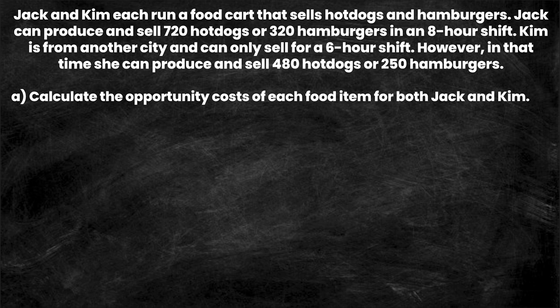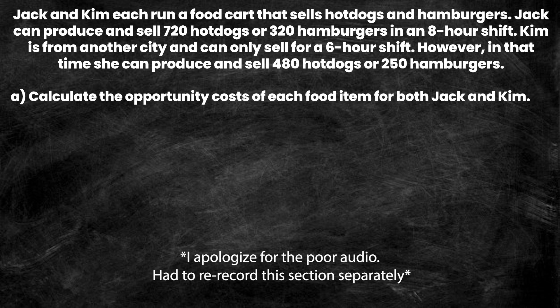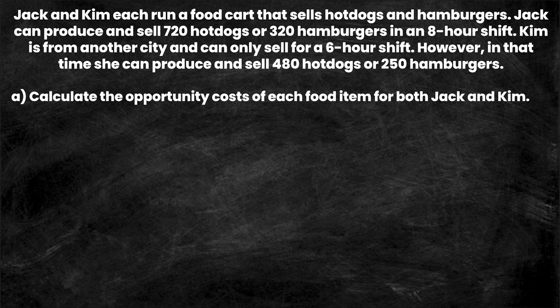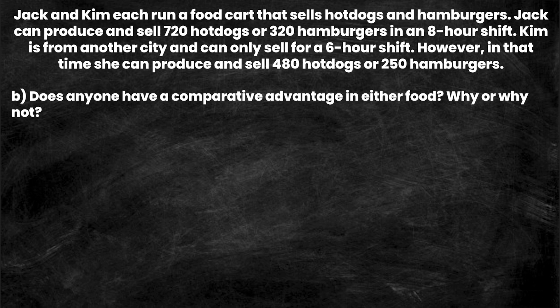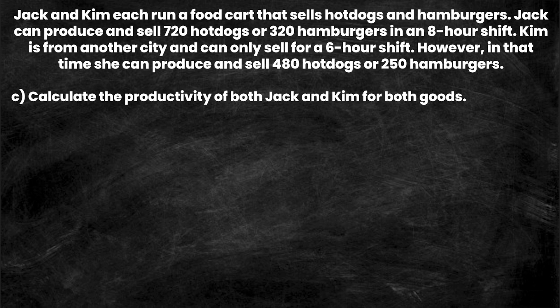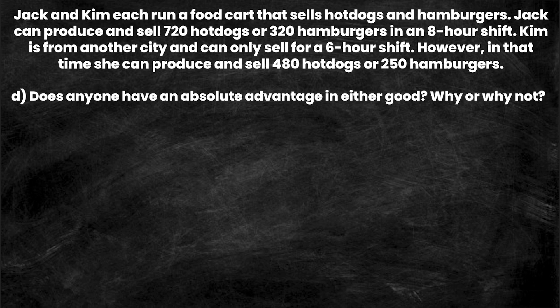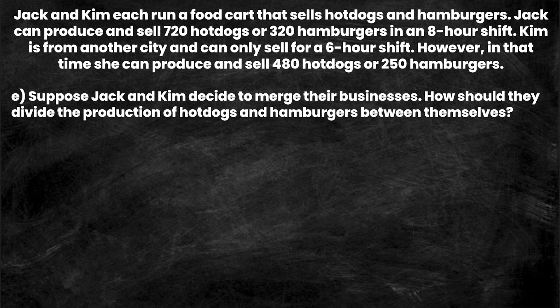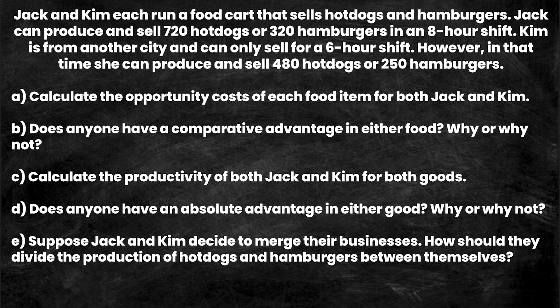Here we have a question you might get on a test. Jack and Kim each run a food cart that sells hot dogs and hamburgers. Jack can produce and sell 720 hot dogs or 320 hamburgers in an eight-hour shift. Kim is from another city and can only sell for a six-hour shift; in that time she can produce 480 hot dogs or 250 hamburgers. We want to: A) calculate opportunity costs for each food item, B) establish comparative advantage, C) calculate productivity, D) establish absolute advantage, and E) determine how they should divide production if they merge.